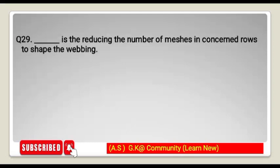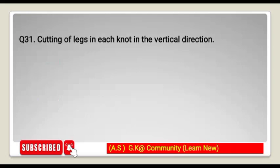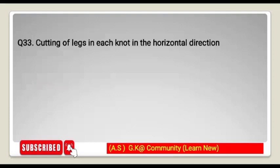Baiting is reducing the number of meshes in concerned rows to shape the webbing. Creasing is altering the shape of webbing by increasing the number of meshes in a concerned row. Cutting off legs at each knot in the vertical direction is a point cut. Cutting off only one leg at each knot is a bar cut. Cutting off legs in the horizontal direction is a mesh cut.